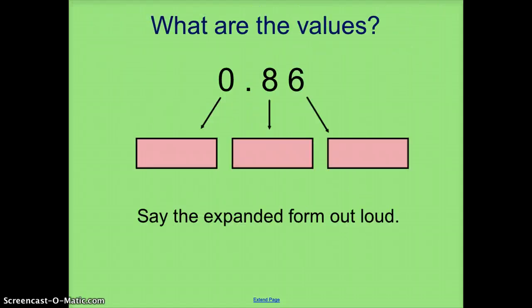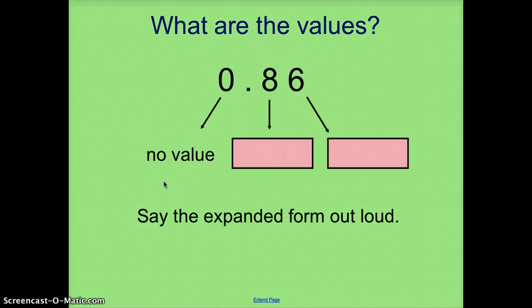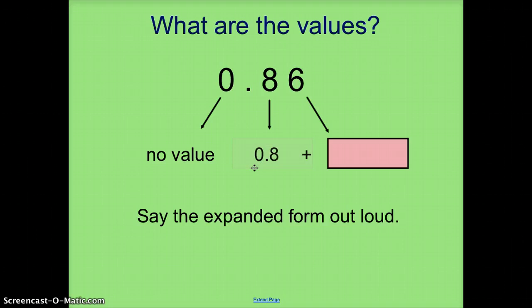Now if we're looking at how to expand a decimal fraction, we need to think about what's the value of the digit in that place value. This 0 has no value, so that's not going to be part of our expanded notation. This is an 8 in the 10s place, so what we're going to turn it into is just 8 10ths. Here is a 6 in the 100s place, so it's just going to be 6 100ths.